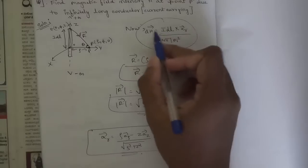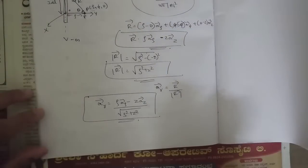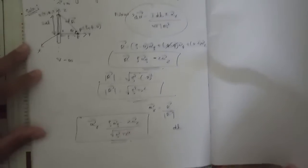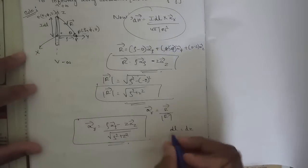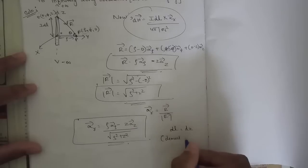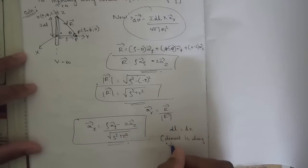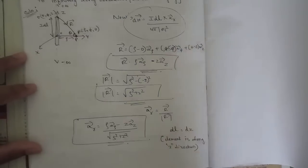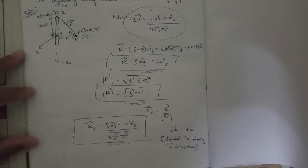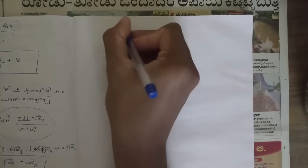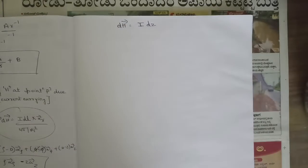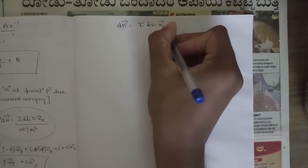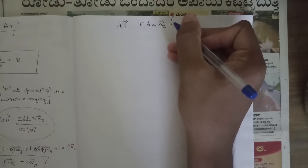Before substituting into the formula, we note that dL = dz, because this infinitely long current carrying conductor is symmetrical about the Z axis — the element is along the Z direction. Now substituting into the Biot-Savart formula, dH equals I dz az cross (ρ aρ − z az), all divided by 4π times the magnitude of R squared.